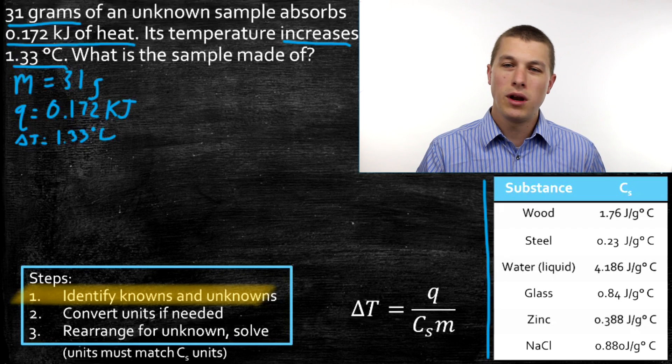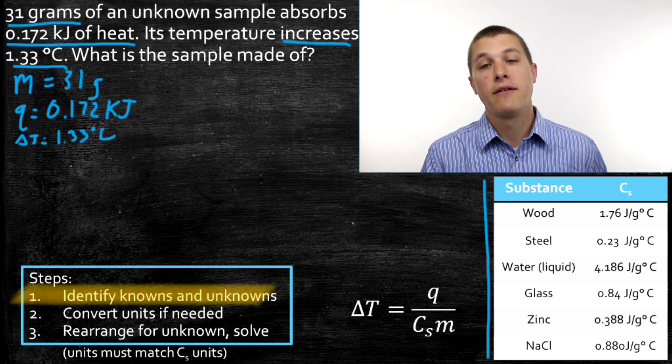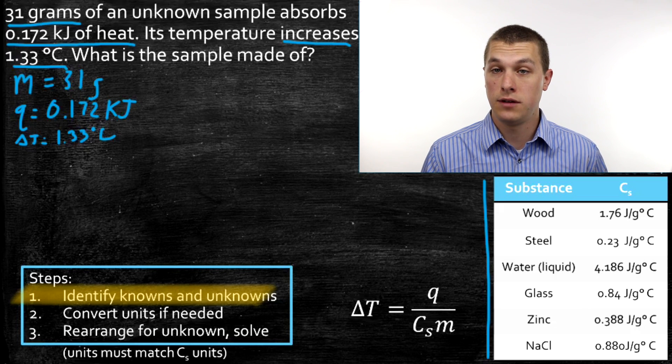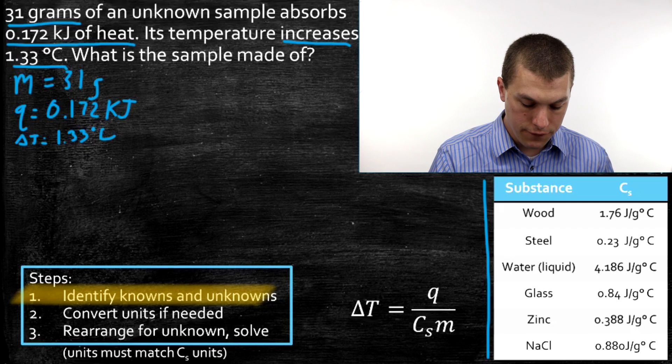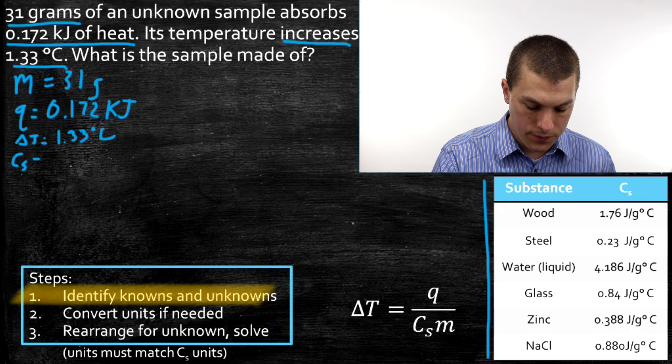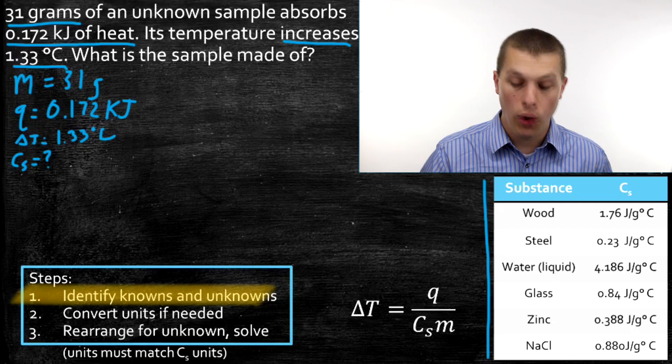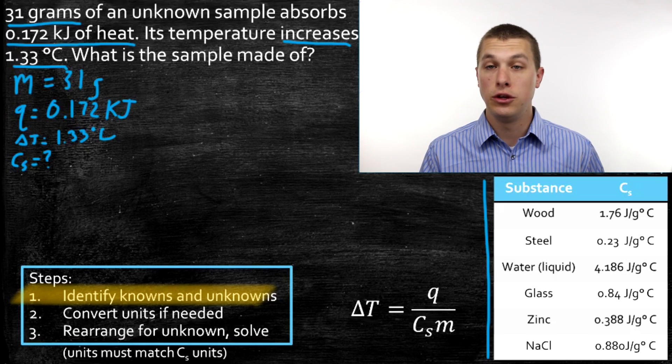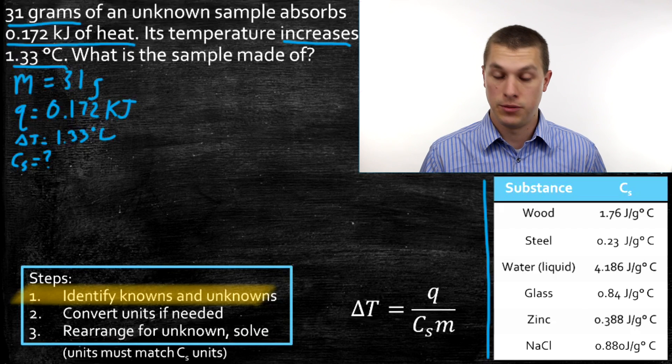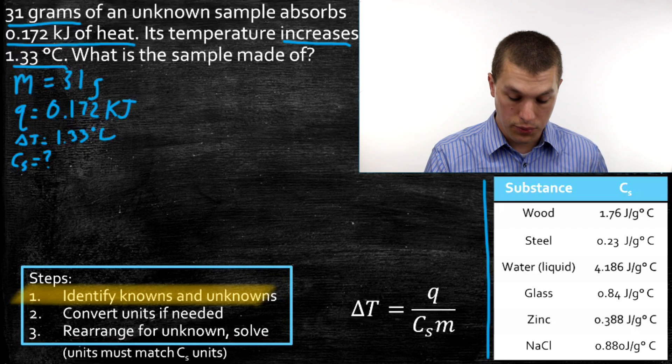What's our unknown here? We want to know what the sample is made of. Whenever that question is asked, what we're looking for in terms of our variables is Cs. So we want to solve for Cs. Why is that? Well, that's the only variable related to the material. So that's the only variable that we can use on the table to figure out what the material is, and I'll show you how we do that at the end of the problem.